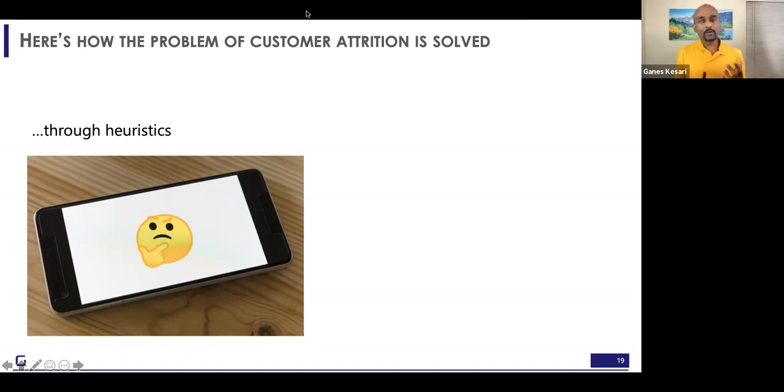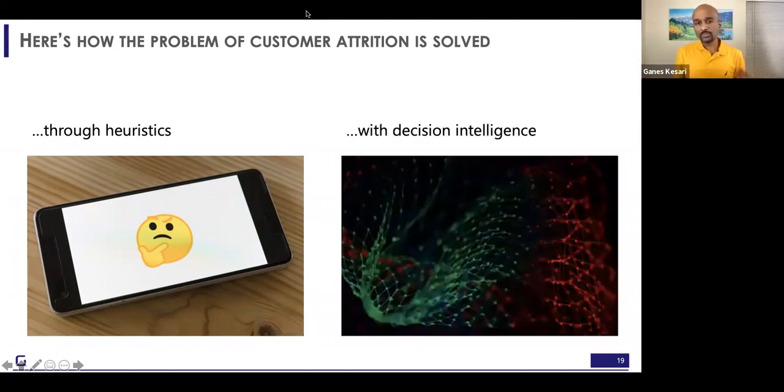Then you'll roll out some promotions or recommendations. Again, you apply heuristics to bucket customers into different clusters, and each cluster most likely will be interested in this kind of product or offering. So that's a typical heuristics-based approach to manage churn.